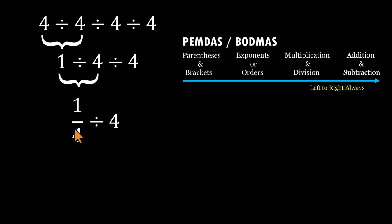Now we're left with one-fourth divided by four. This is where the KCF rule helps. Keep, change, flip. Keep the first fraction as it is. Change division into multiplication.